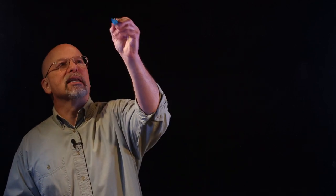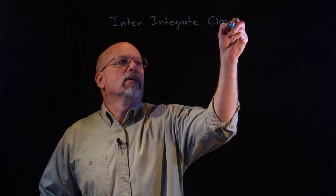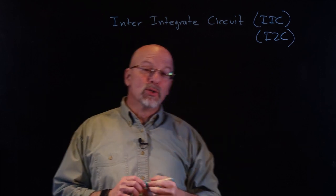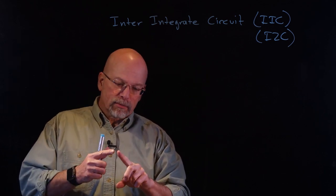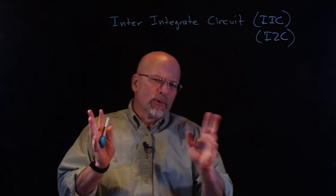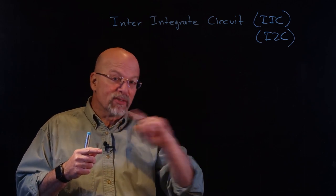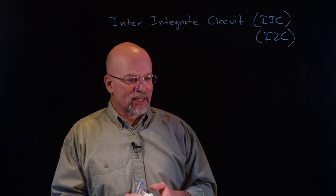Wouldn't it be cool if we could add an address to those frames in order to identify exactly which peripheral we were communicating with? Turns out, we do have that — in the form of a protocol referred to as the Inter-Integrated Circuit, or IIC, or what I'm going to call it, I-squared-C, or I2C. This interface allows us to go back to two lines. We have one wire used for both transmitting and receiving data — it's bidirectional — and then a clock line to synchronize the bits as they're being sent.